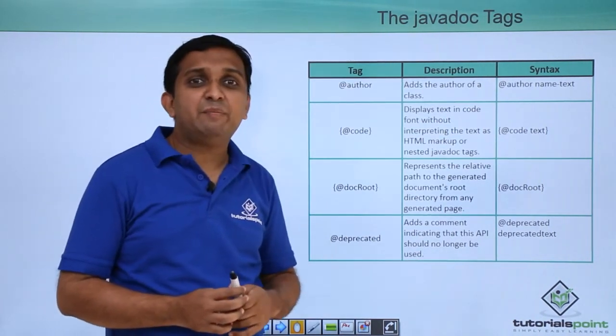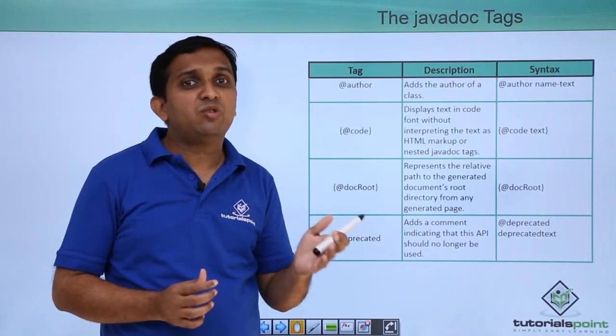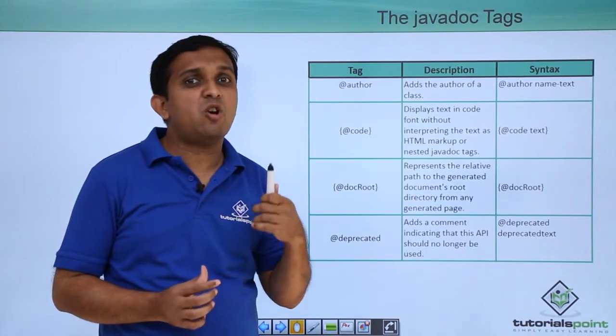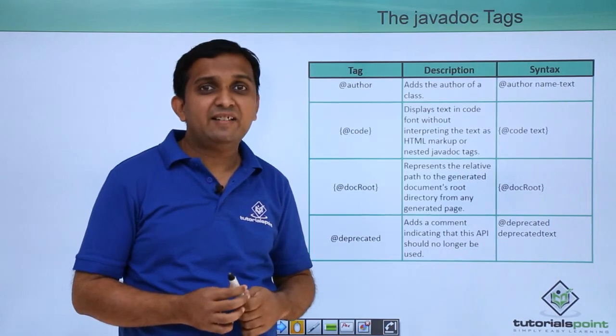Then @deprecated is there. Deprecated is used if some method is out of version. If it is no longer used then you will declare that as deprecated.